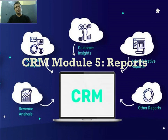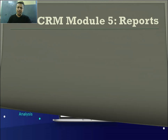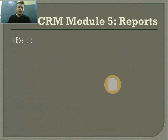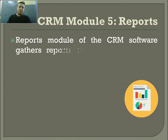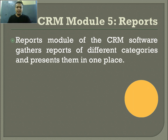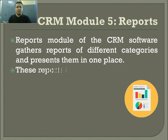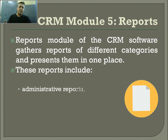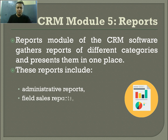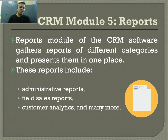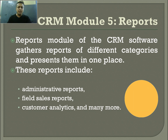CRM Module 5 is Reports. As the name suggests, this module gathers reports of different categories and presents them in one single place. Different categories include administrative reports, field sales reports, customer analytics, and many more. All these reports are compiled here, making it a single point of contact where managers can find all reports related to the entire CRM or sales process.